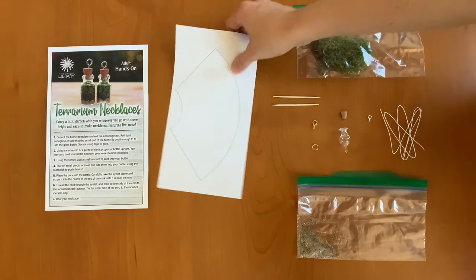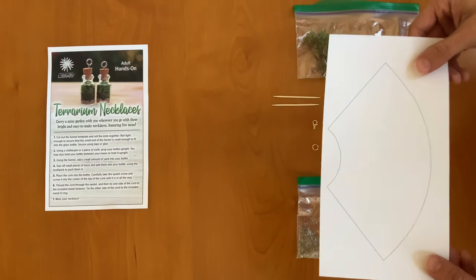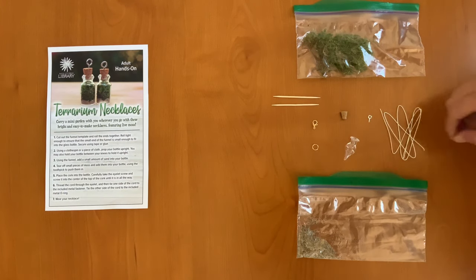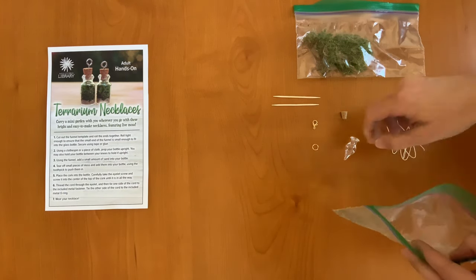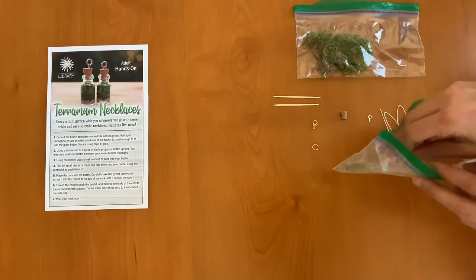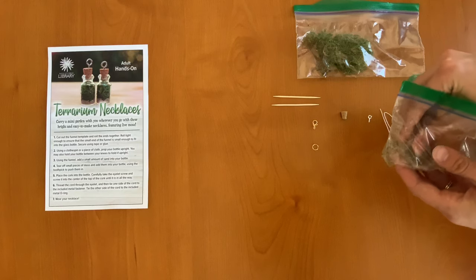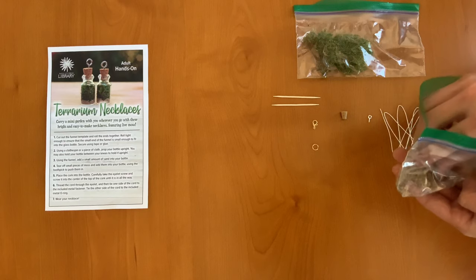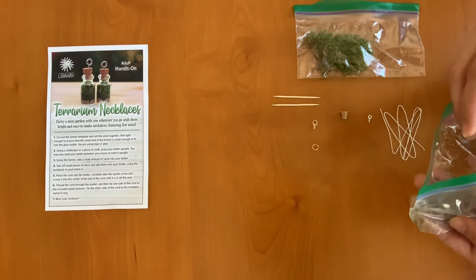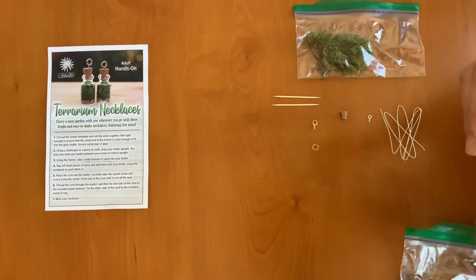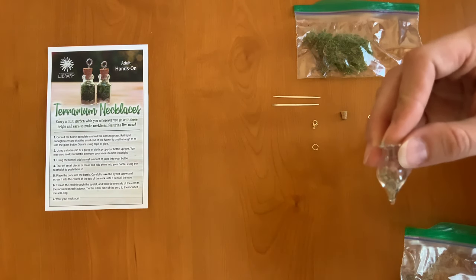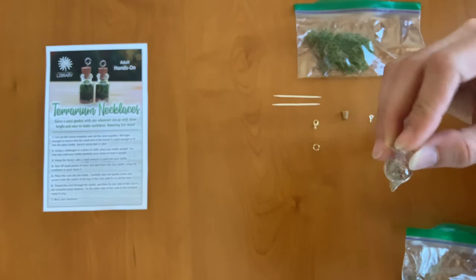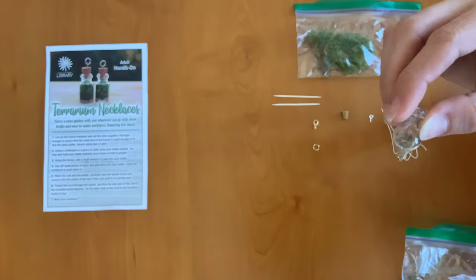Our first step is to cut out the funnel template to get the sand into the vial. Alternatively there's an easier way where we can just open up our bag of sand and scoop a little bit of it into the vial. You don't want a lot of sand in your vial, just about maybe a quarter of the way filled with it, maybe just that bottom pointed part.